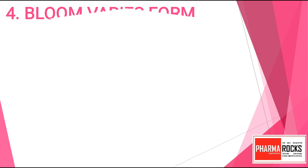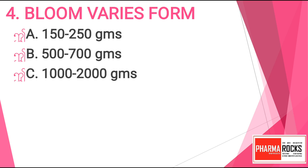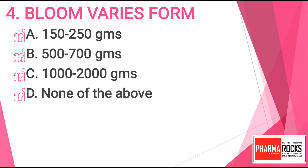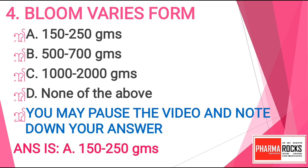Question 4: Bloom value varies from — Option A: 150 to 250 grams, Option B: 500 to 700 grams, Option C: 1000 to 2000 grams, or Option D: none of the above. You may pause the video and note down your answer. The correct answer for this question is Option A, 150 to 250 grams.